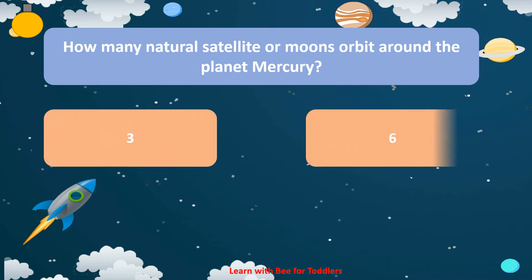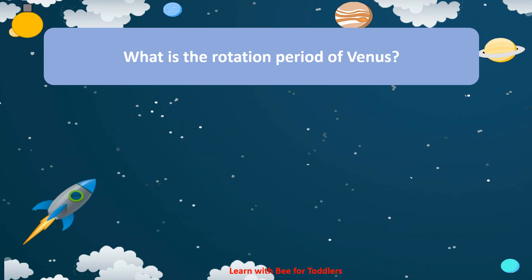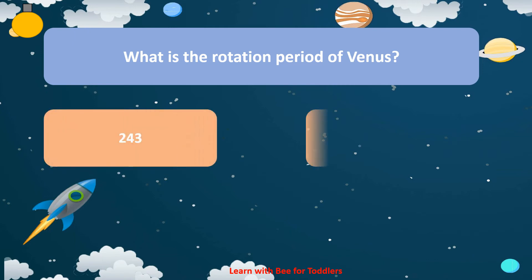6. 7. None of the above. None of the above. What is the rotation period of Venus? 243.